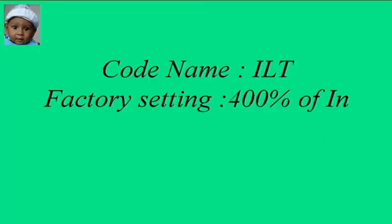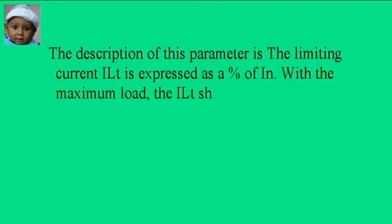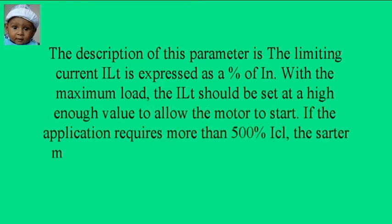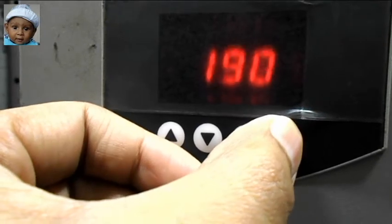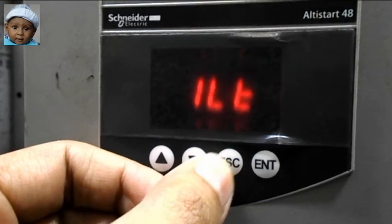Our second parameter is ILT and the factory setting value is 400% of IN. The ILT stands for limiting current and ILT is expressed as a percentage of IN. I have given two examples that show how much value you can set on the ILT parameter.